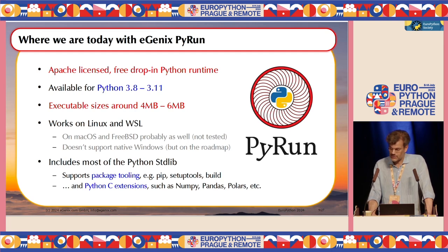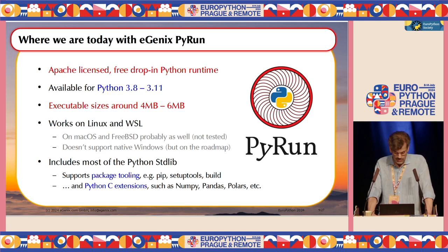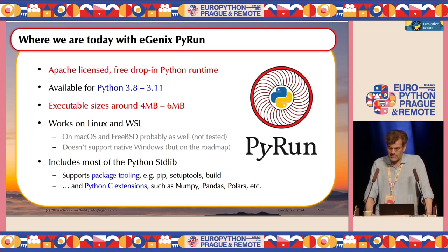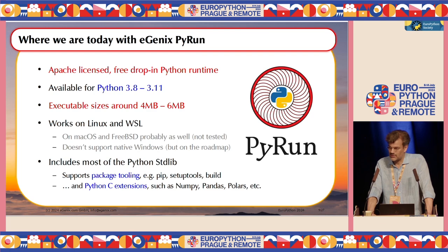So where are we today with Egenics PyRun? It's open source under the Apache license — free, like most Apache software. It's an almost complete drop-in replacement for the Python runtime, available for Python 3.8 up to 3.11. I'm going to try to work on the port to 3.12 at the sprints, so if someone wants to help, please come join me. The executable sizes are pretty small — a complete runtime is between four and six megabytes on disk.